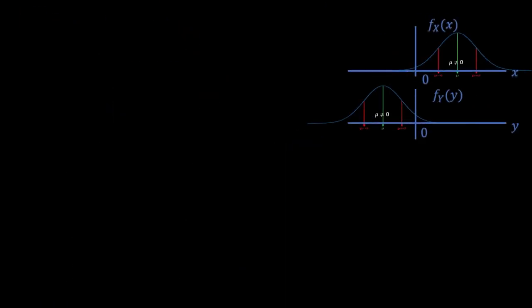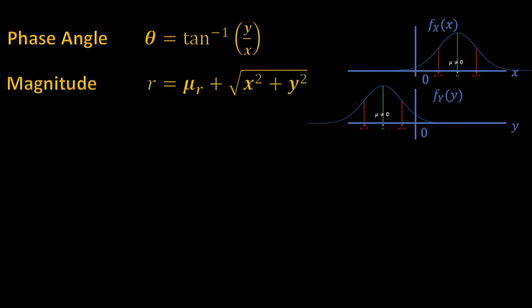As before, we can have the phase angle as theta which is tan inverse y by x. But because of a dominant area in the pitch map, the magnitude will now be r that is equivalent to μr plus the square root of x square plus y square, where the μr represents the mean distance to the centroid. That is μr is equivalent to the square root of μx square plus μy square. And herein μx and μy are the mean values across the random variables which are x and y respectively.